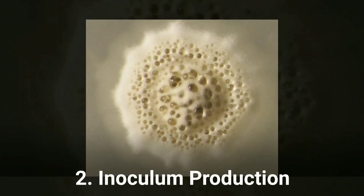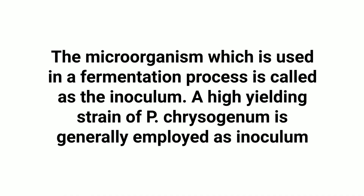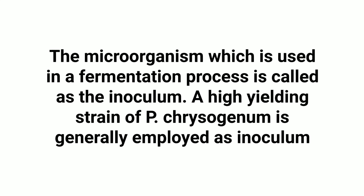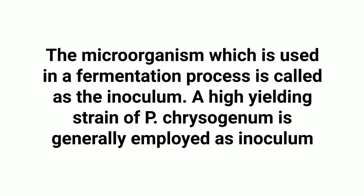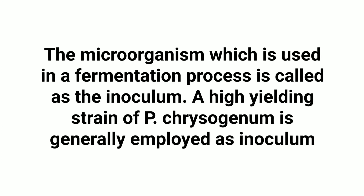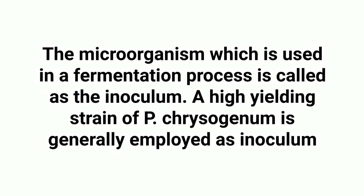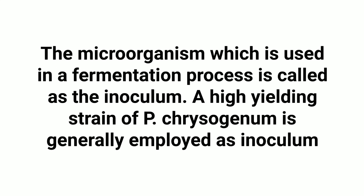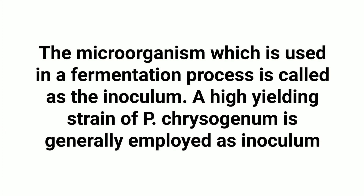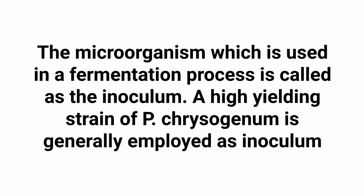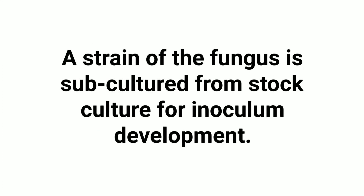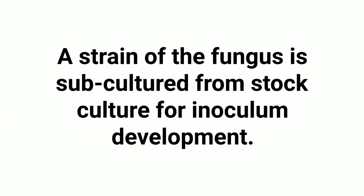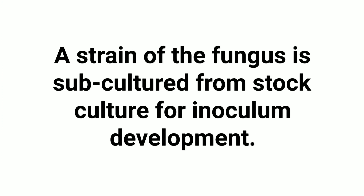The second stage is inoculum production. The microorganism used in a fermentation process is called an inoculum. A high-yielding strain of Penicillium chrysogenum is generally employed as the inoculum. A strain of the fungus is subcultured from stock culture for inoculum development.